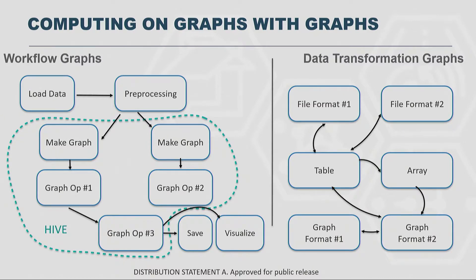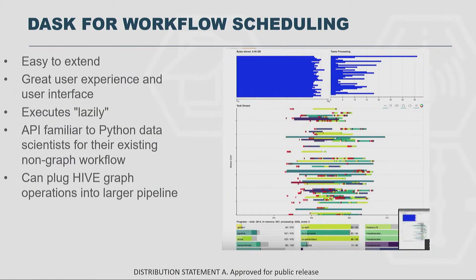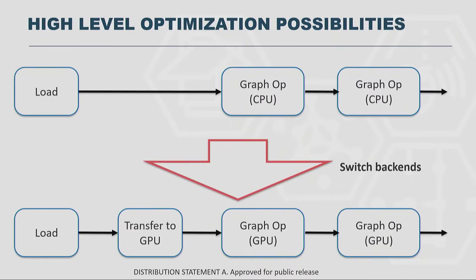Essentially, it's a graph problem to solve graph problems — think of it as a metagraph. Your data transformation graphs are one set of graphs, and the workflow engine itself is another graph. The data transformation graph work is something we've done for the dense array data science ecosystem, and the workflow graph side is something we built as part of a previous DARPA effort. That's a library called Dask, which is a rising star in the data science ecosystem for distributed scale-up and scale-out computing. In fact, Dask is the heart of NVIDIA's Rapids GPU-enabled data science framework.